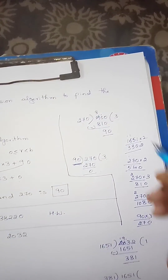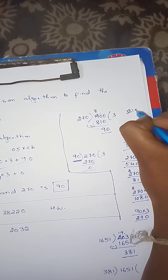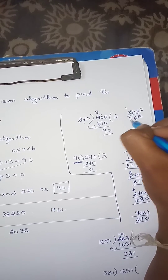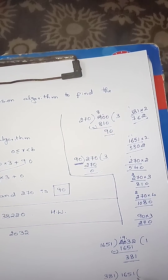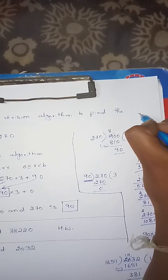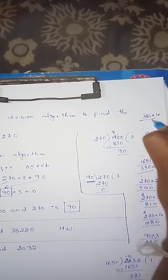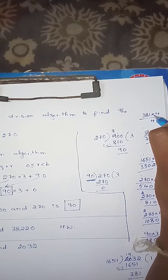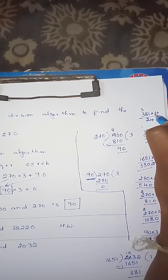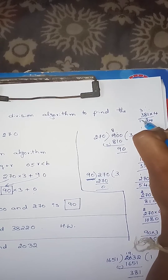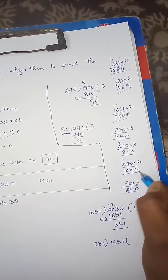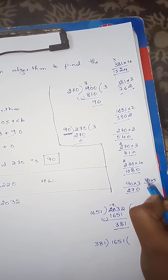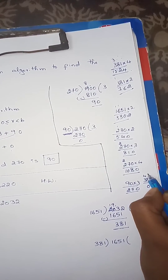Now 1651 divided by 381: 1 into 2, then 8 into 2 is 16, 3 into 2 is 6, giving 762. Then 381 into 4: 8 into 3 is 24, 8 into 4 is 32, 4 into 3 is 12, giving 1524. Then 381 into 5: 5 into 1 is 5, 8 into 5 is 40, 3 into 5 is 15, 16, 17, 18, 19, giving 1905.